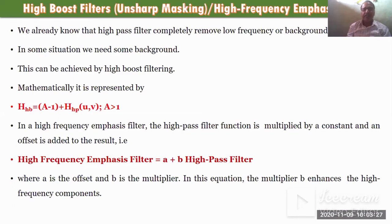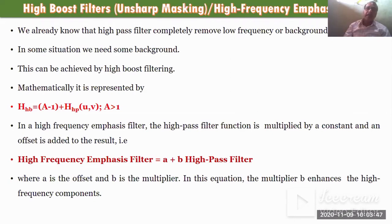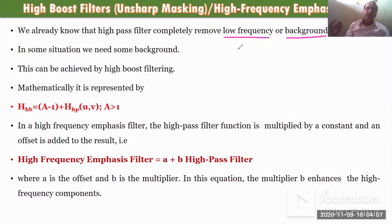When a high pass filter is applied on the frequency domain or on the image, it can remove the low frequency. Low frequency is related with the background, whereas high frequency is related with the noise and edge parts. So the high pass filter completely removes the low frequency or it removes the background part from the image.